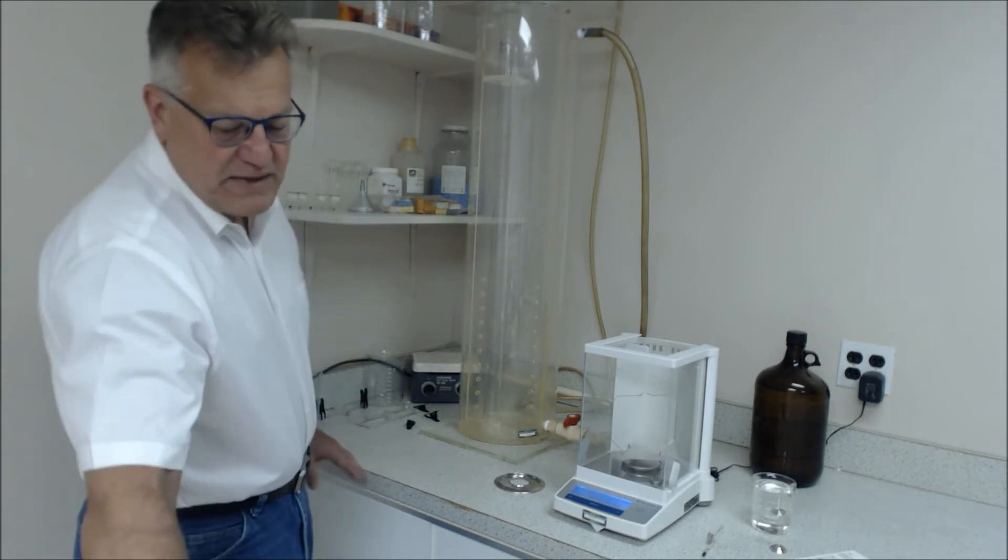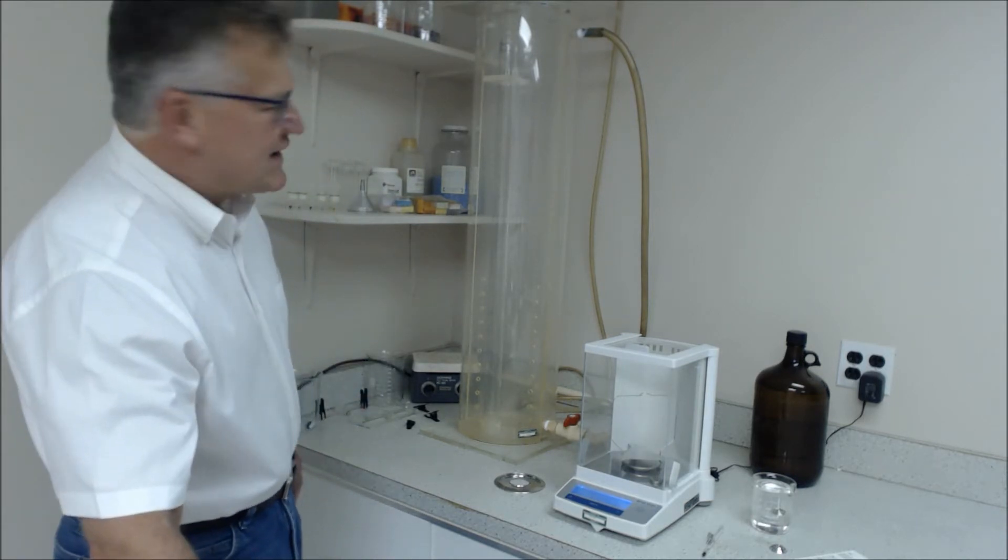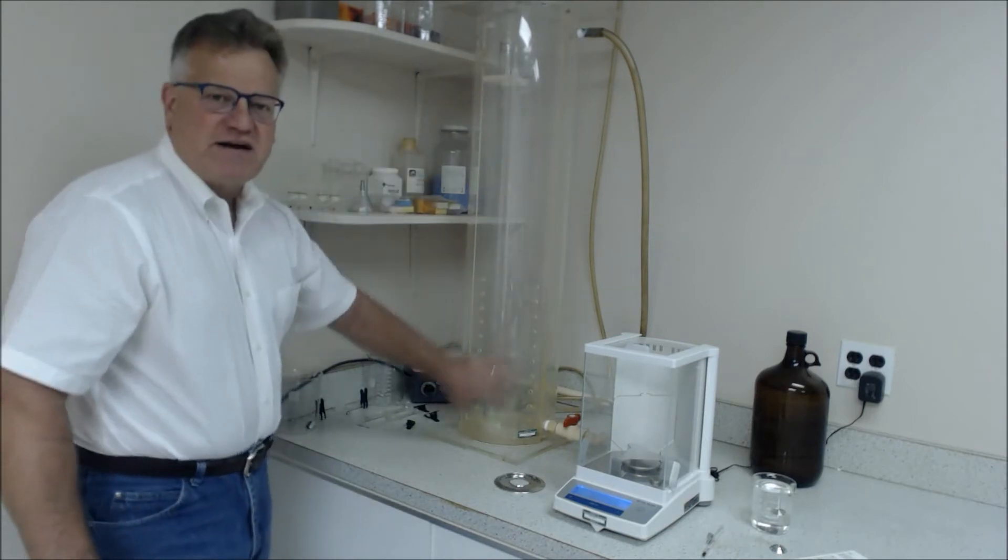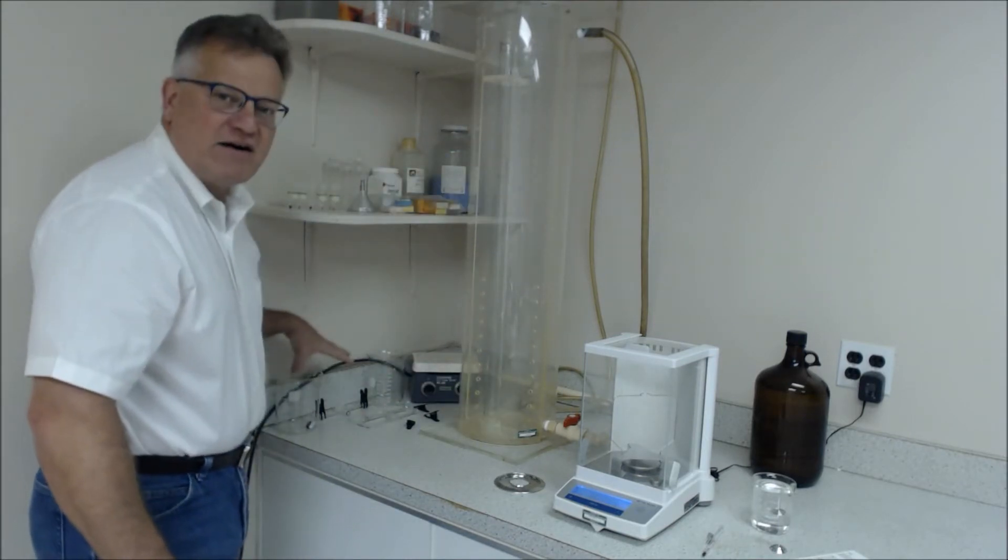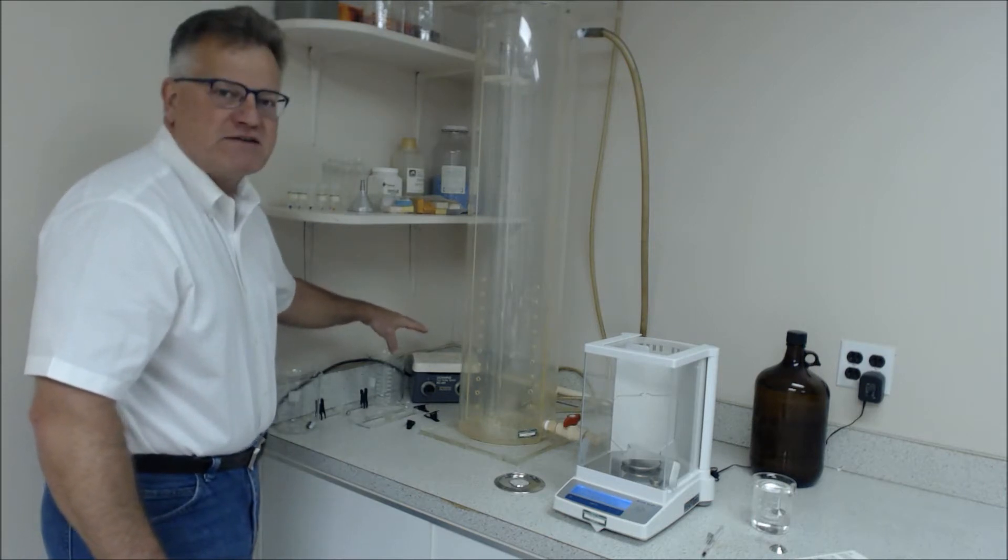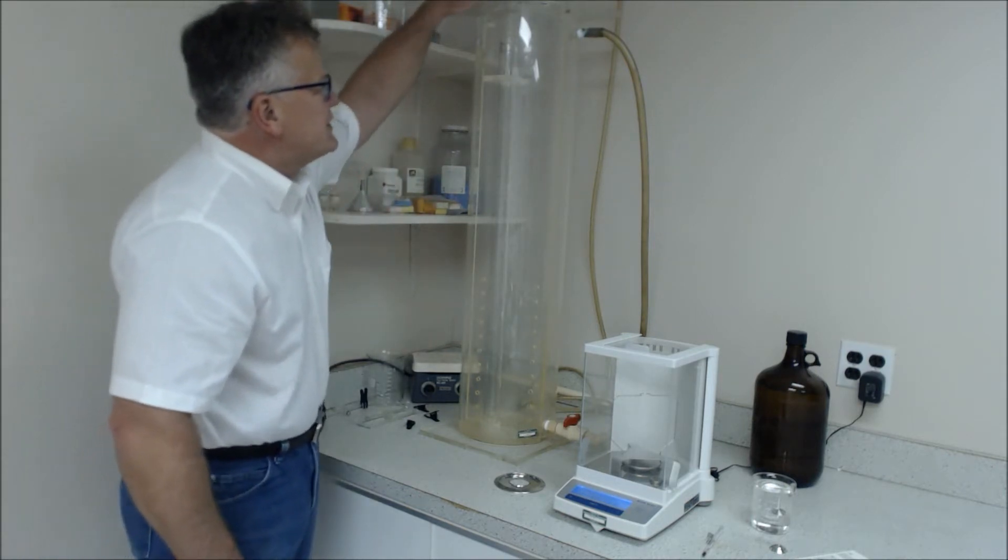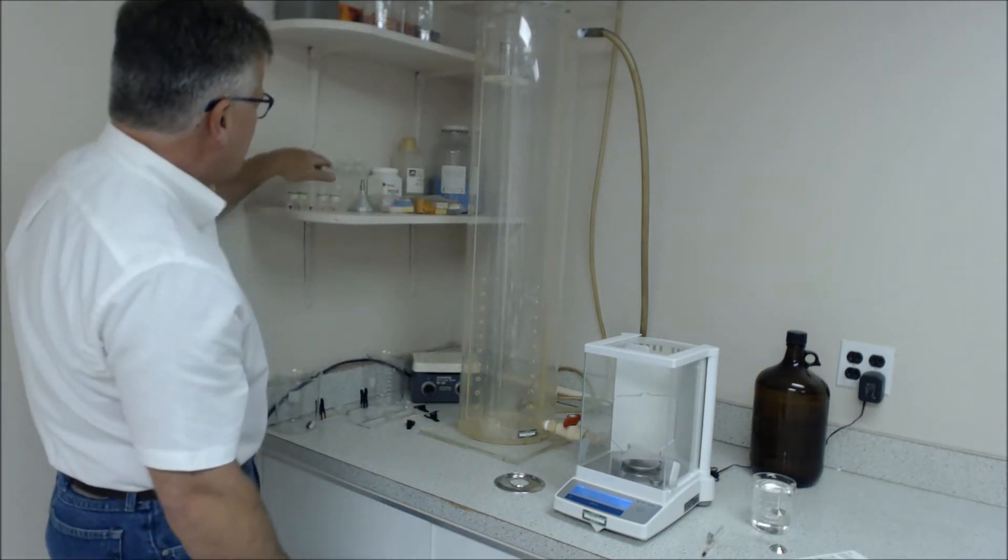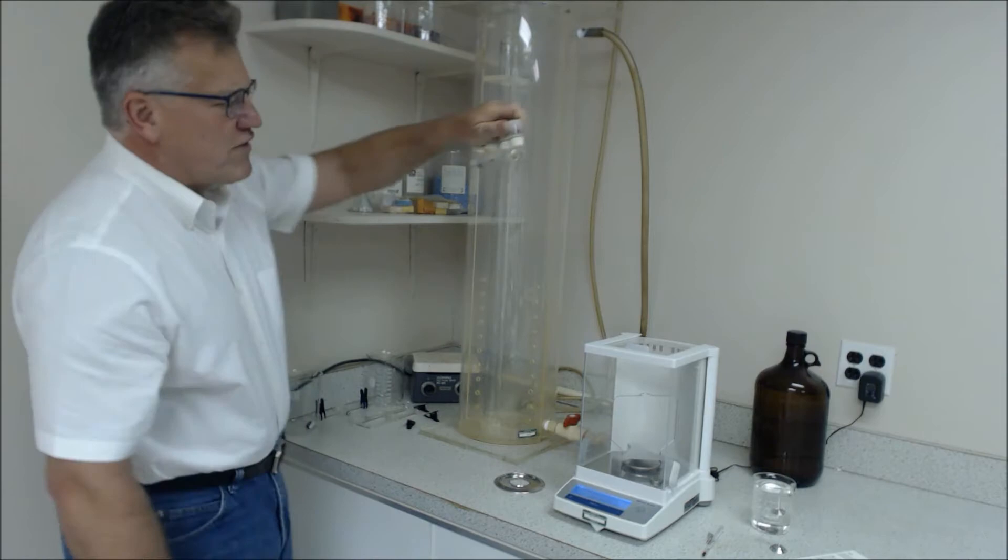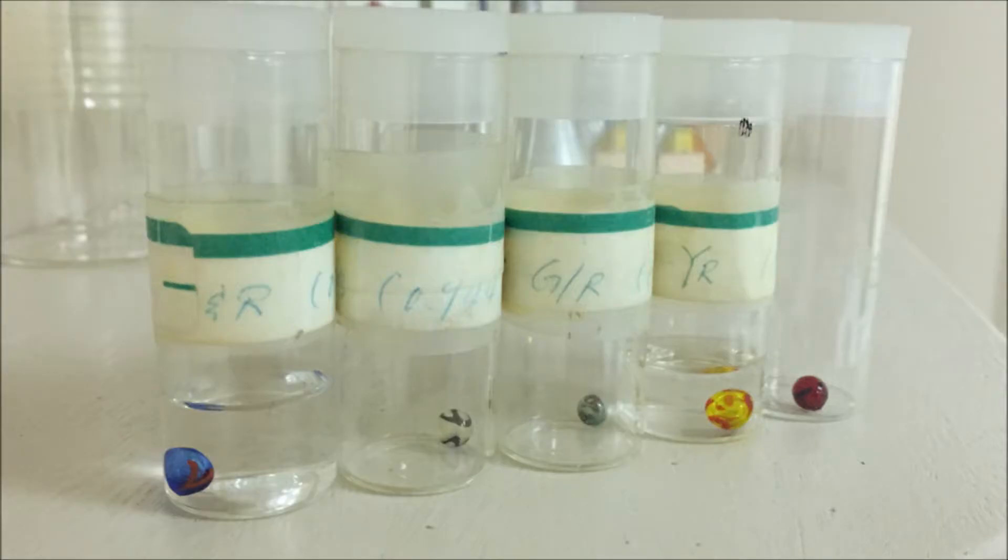The first of the methods is a density column. It's shown to me here in the back, and what we do is we take a mixture of alcohol and water, which is a prepared solution, and introduce it into this central column. The central column has a gradation associated with it, and what we do is we float reference balls of known density inside that column.